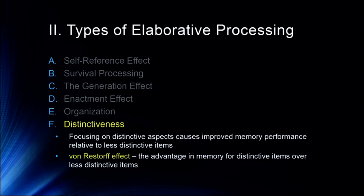This all started with the Von Restorff effect, where we get a memory advantage for distinctive items over less distinctive items — they just stand out. For example, if you have one word in blue in a list of items all in red, the blue item will be remembered better because it stands out. That's why I often use extraordinary examples in my courses — things like bizarre head injuries like Phineas Gage. Because they're distinctive and unique stories, they help us remember things better. Think about ways to make things distinctive and make them stand out in memory.